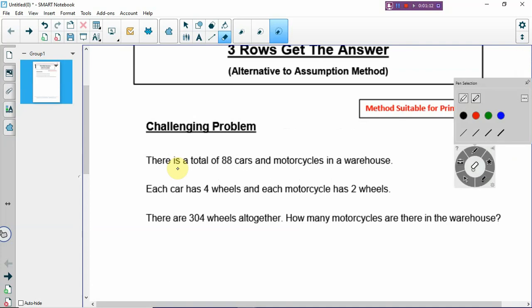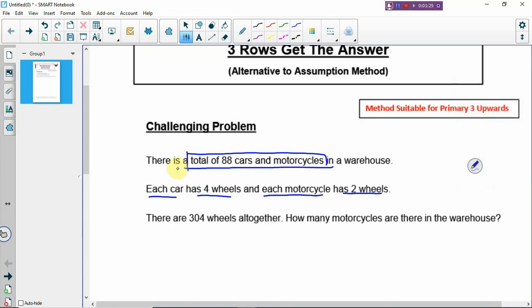When you solve problems it is important that you highlight the key words and the numbers. This is a total number of vehicles and each car has four wheels and each motorcycle has two wheels. There are 304 wheels altogether. How many motorcycles are there in the warehouse?